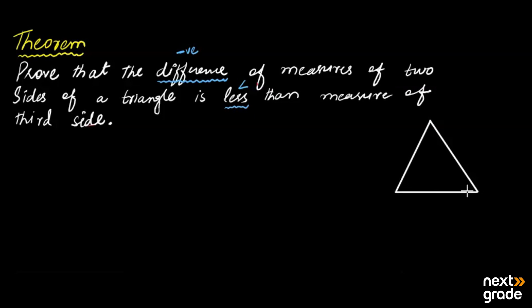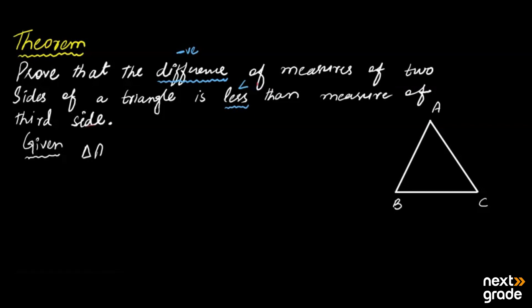First of all, we will consider a triangle. It can be any category — scalene, equilateral, isosceles, or right angle triangle. It is up to you which type of triangle you draw.